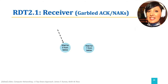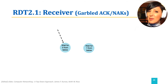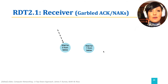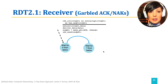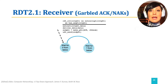On the receiver side, starting in the state of waiting for packet zero, if a non-corrupt packet with sequence number zero is received, data is extracted from the packet and sent to the layer above.